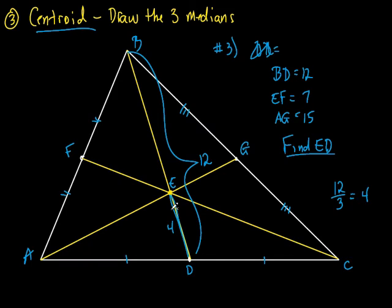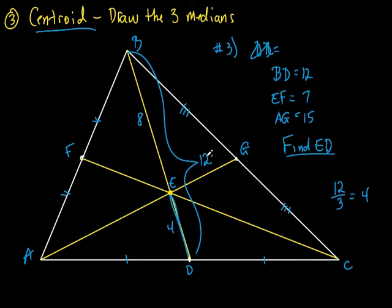I could also ask you for BE. If I know ED is 4 — which is one third — then BE is the longer two-thirds part, so I'd double it: BE equals 8. And of course 4 plus 8 equals 12, which checks out. Does that make sense?